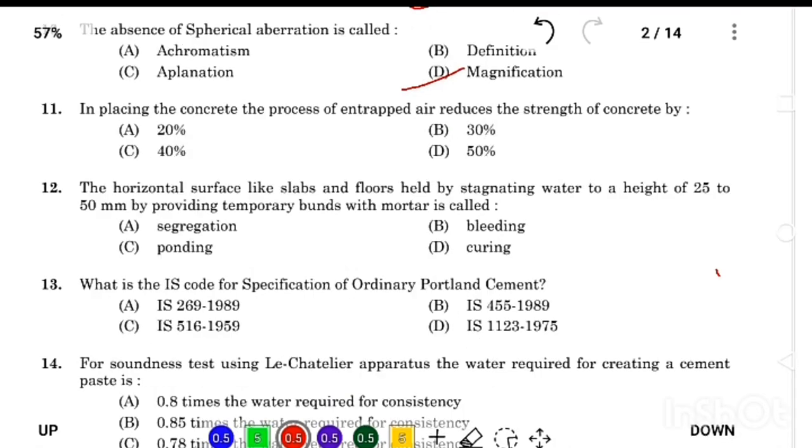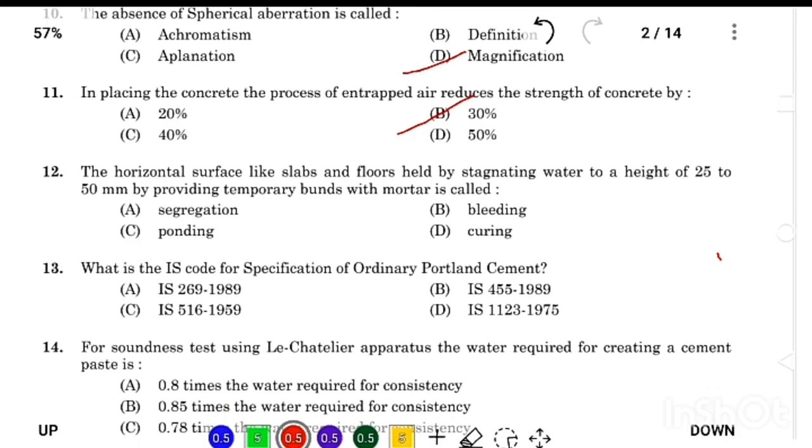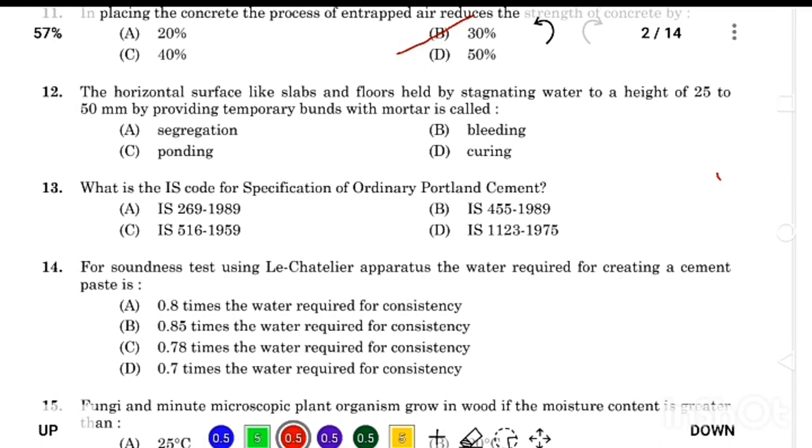In placing the concrete, the process of entrapping air reduces the strength of concrete by Answer Option B, 30%. The horizontal surface like slabs and floor held by stagnating water to a height of 25 to 50 mm by providing temporary bunds with mortar is called Answer Option C, ponding.